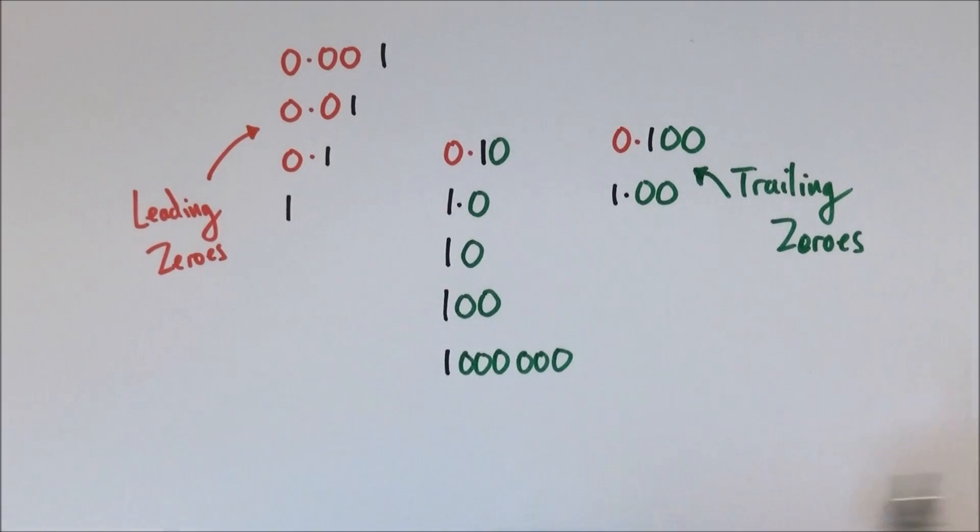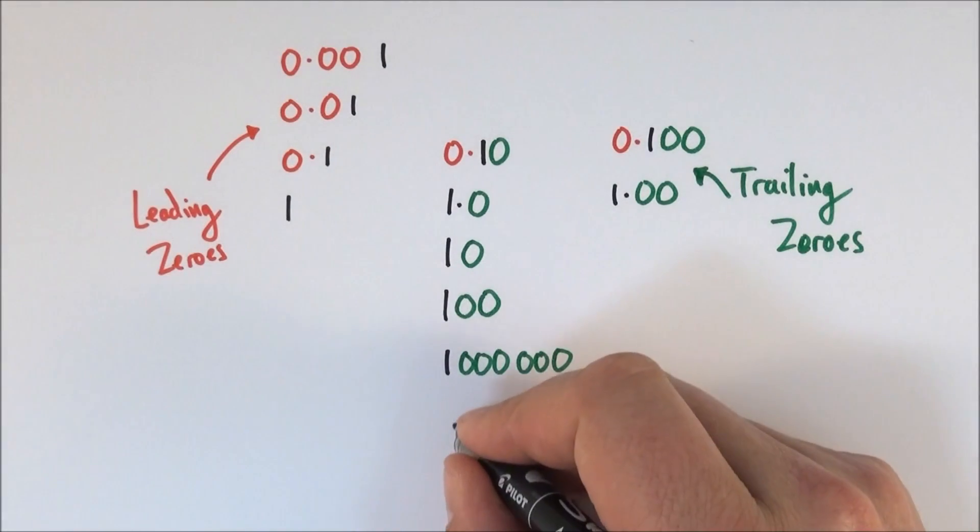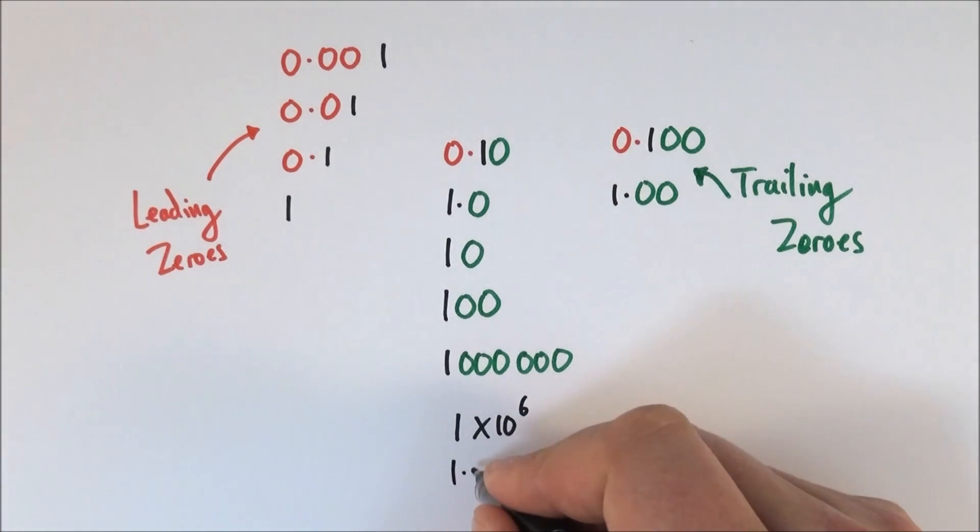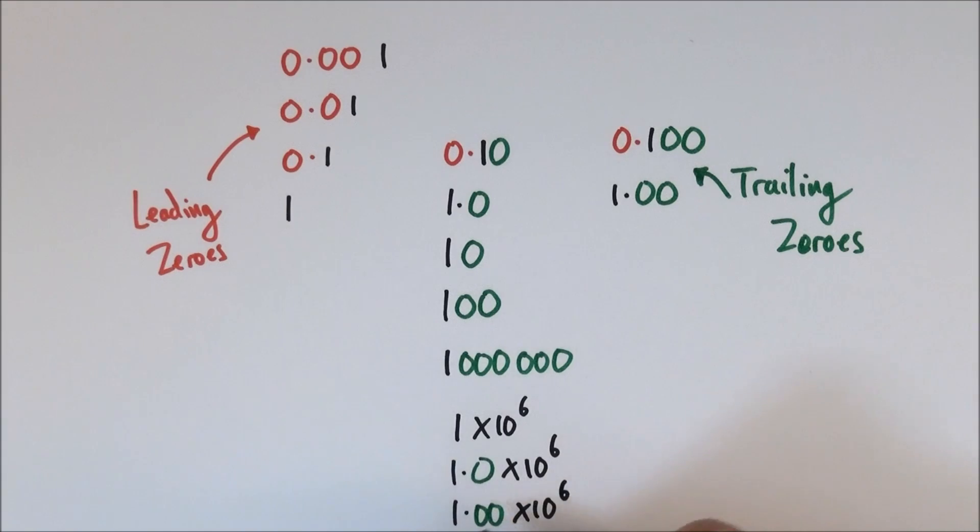So for example if you want to express a million you can also write it as 1 times 10 to the 6 or perhaps it could be 1.0 times 10 to the 6 or even 1.00 times 10 to the 6.